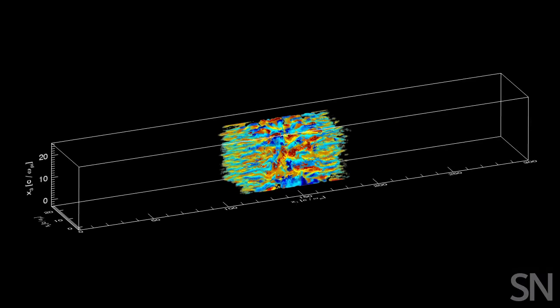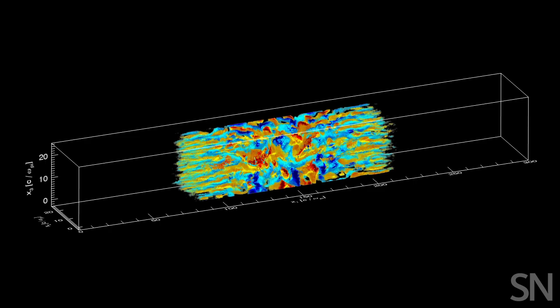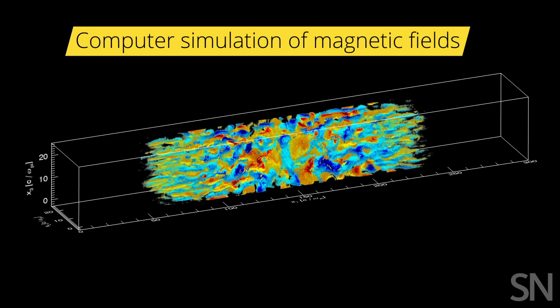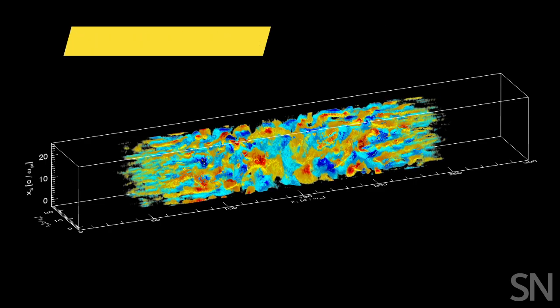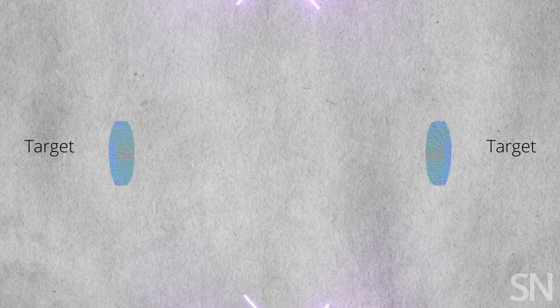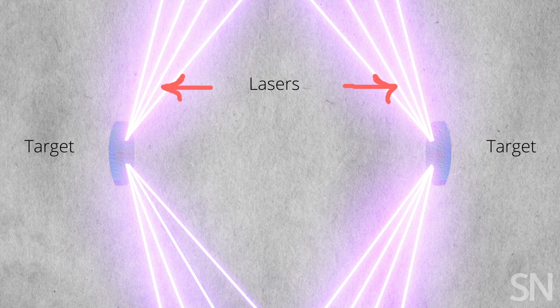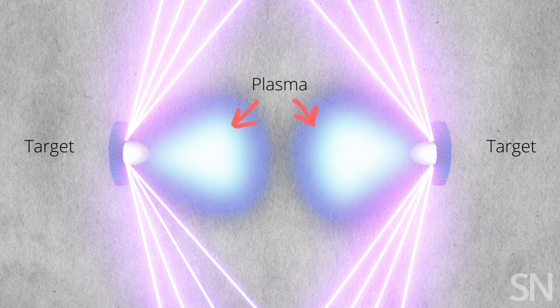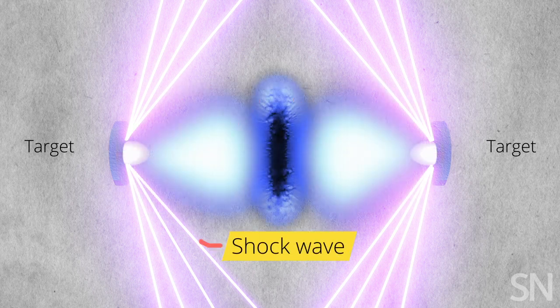Scientists use lasers like those at the National Ignition Facility to produce colliding bursts of plasma, revealing how magnetic fields form within. In a recent experiment, scientists also reproduce a supernova remnant's shockwave, showing for the first time how particles are accelerated.